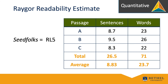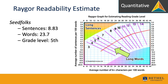Here is the table for the data from the three passages. For both words and sentences, passages A, B, and C are added and then divided by three, which allows us to plot the score on the graph. Using the Rager readability estimate graph — average word length and average sentence length — we can now see that Seed Folks looks quantitatively equivalent to fifth grade. Most would say it is a fifth-grade readability.